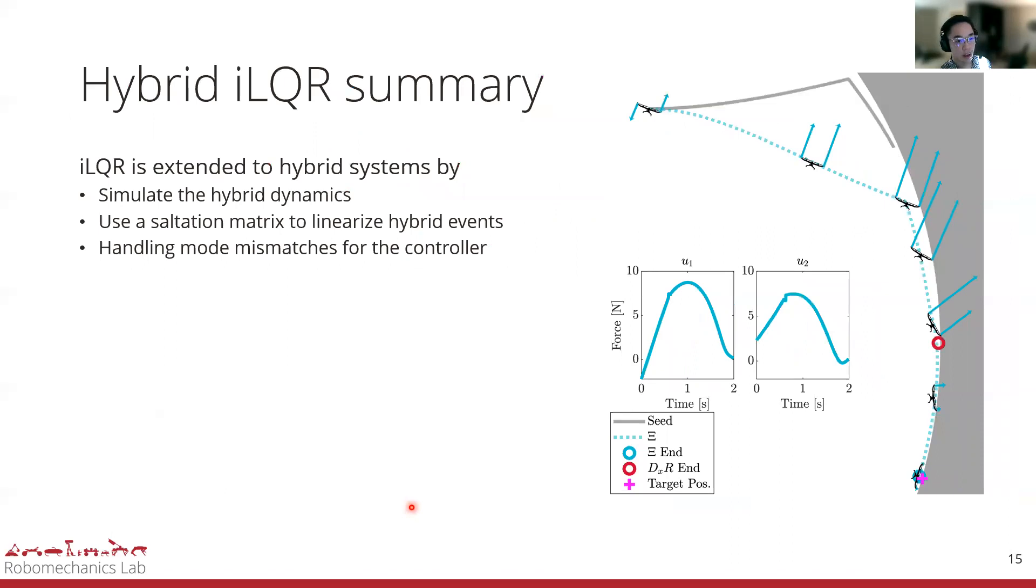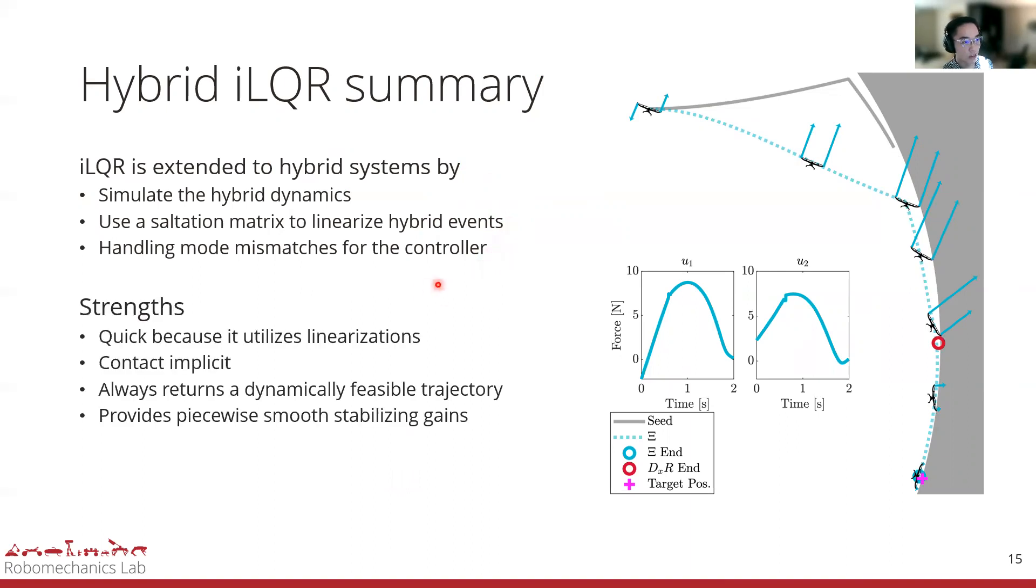In this work, we extended iLQR to hybrid dynamical systems through three main hybrid modifications. We simulate the hybrid dynamics on the forward passes, use the correct linearization about the hybrid events on the backwards paths, and handle mode mismatches in the controller. The strengths of this algorithm are that it is able to efficiently plan out a hybrid trajectory due to linearizations. It is contact implicit, so it can move, add, or remove contacts if it will improve the cost. It always returns a feasible trajectory because it is a shooting method, and we also provide stabilizing gains about these hybrid trajectories, which is pretty unique.